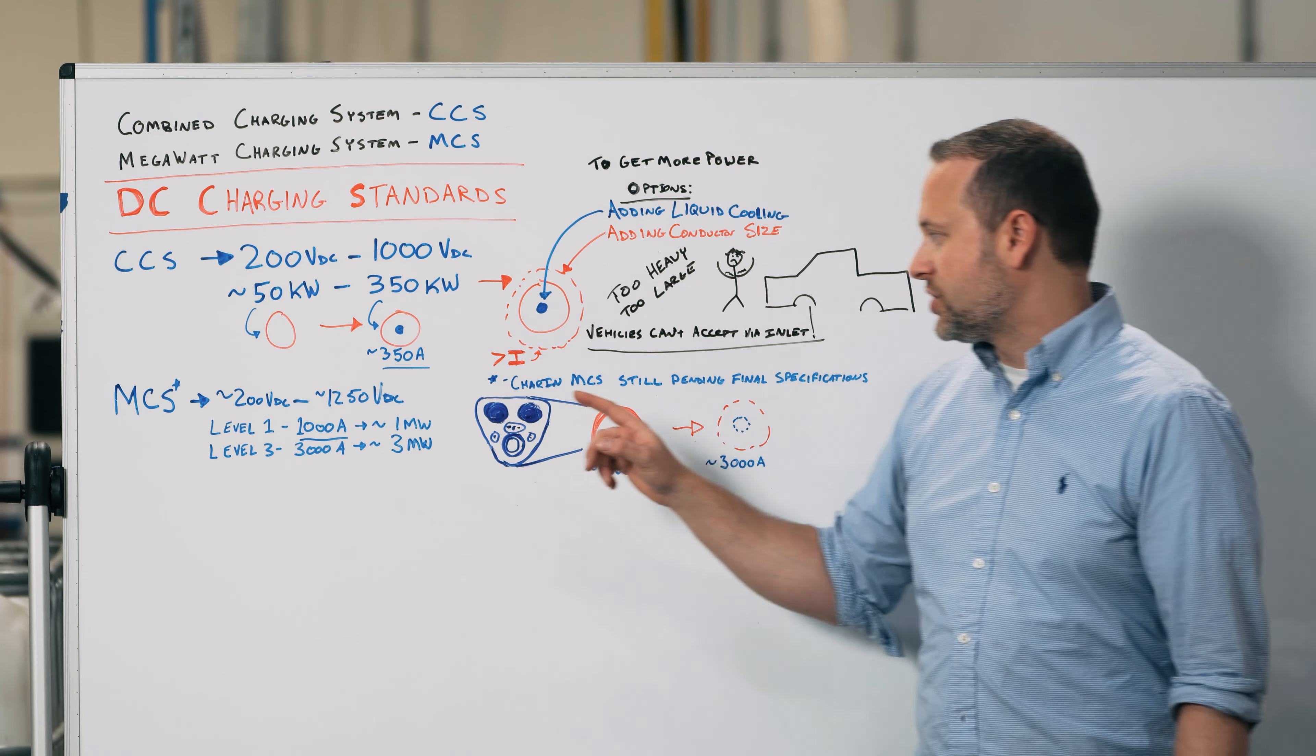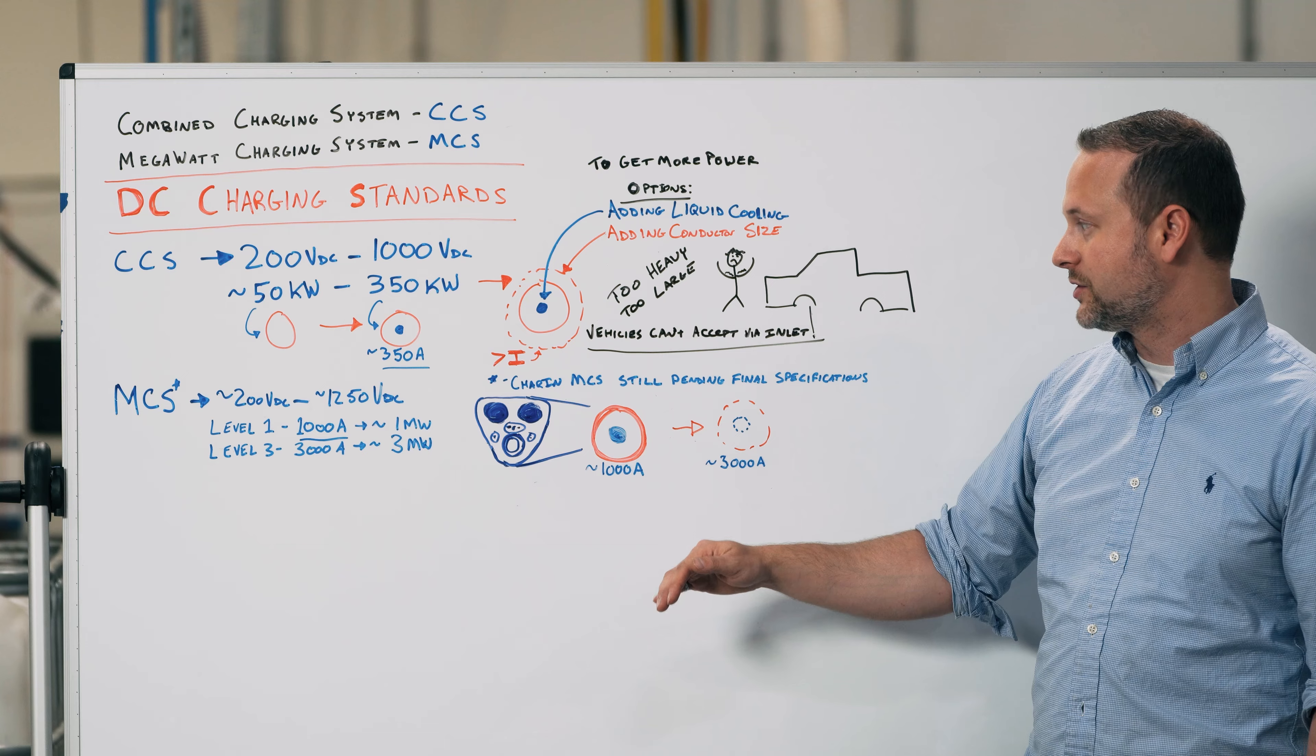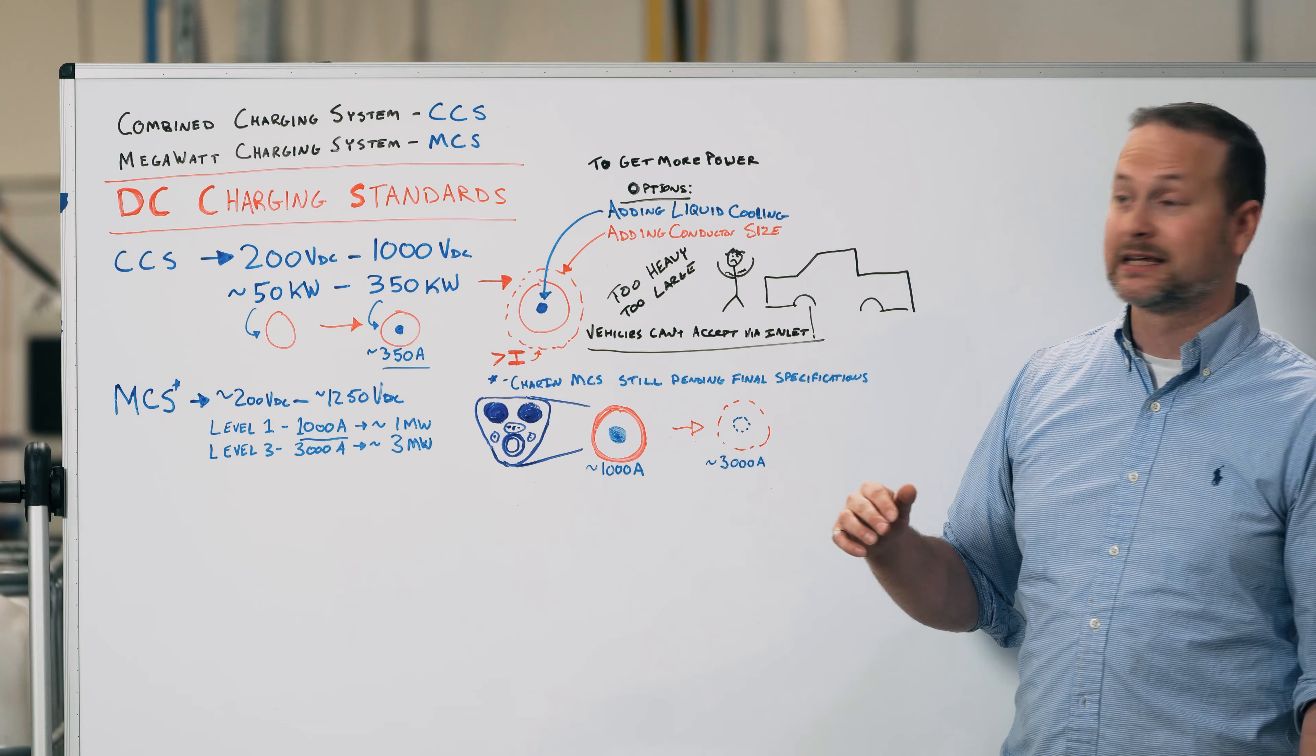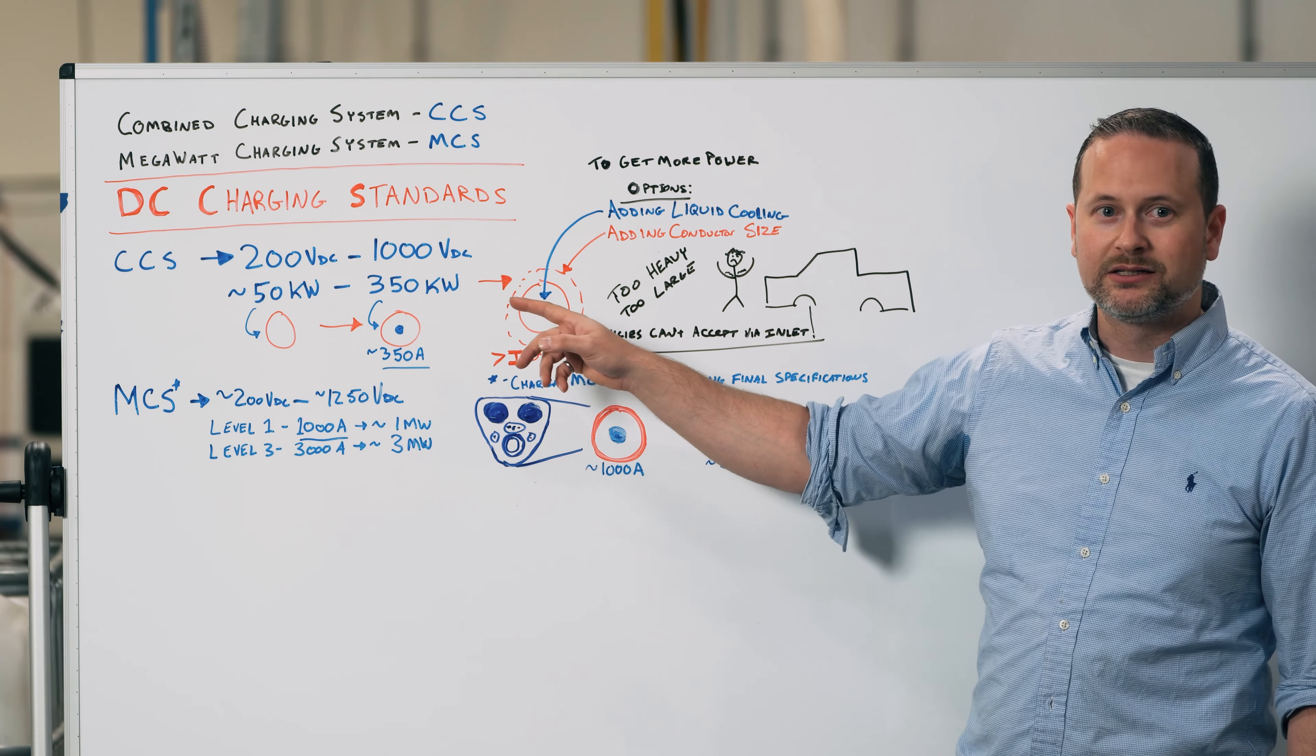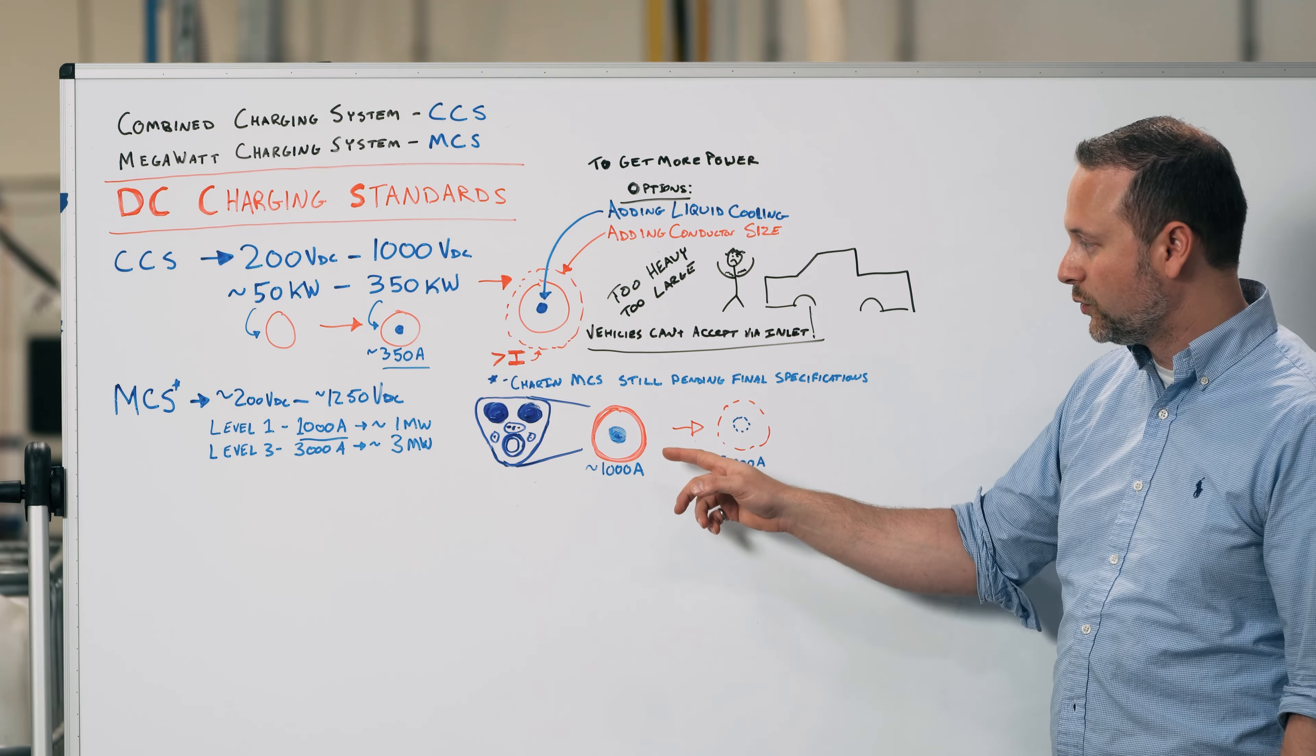For the megawatt charging, you see a new handle that can accept that 3,000 amps of current. We're focused primarily in the level 1 category for our XTXP. And we're able to achieve that via similar size cable. The cable has a little bit different properties in terms of liquid cooling.